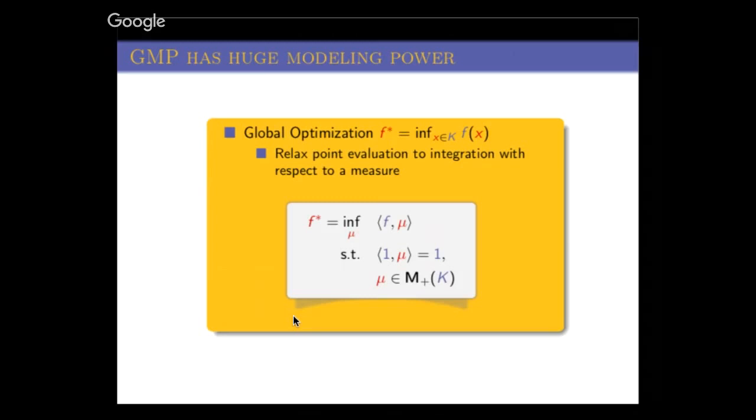Basically what you do is, instead of searching for points that minimize your function, you search for integrals of your function. You integrate your function with respect to a measure, and you search for the measure which minimizes this function. It turns out that the optimal measure will be concentrated in a minimizing point. If there are several points, the measure can be concentrated in several points, which makes the problem linear.